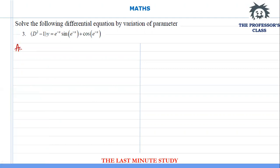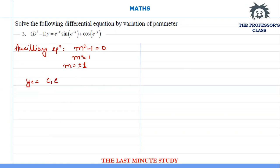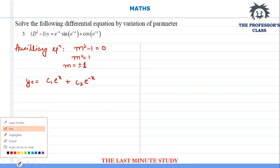For the next question I'll start from the auxiliary equation. Substituting m for D: m² - 1 = 0, so m² = 1, giving m = ±1. With roots +1 and -1, the complementary solution is yc = c1·e^x + c2·e^(-x).